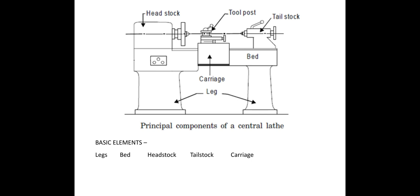The first part is the leg. This is the bottommost part of the machine, used for supporting all parts of the machine. Legs are made up from gray cast iron, and they absorb vibrations during machining.